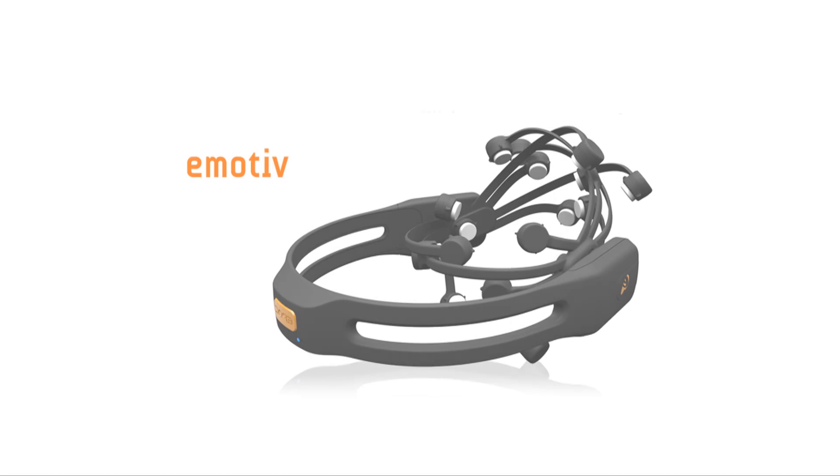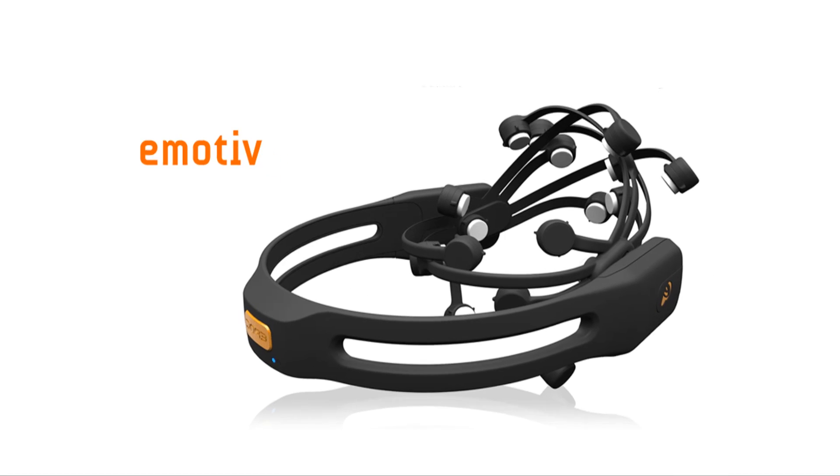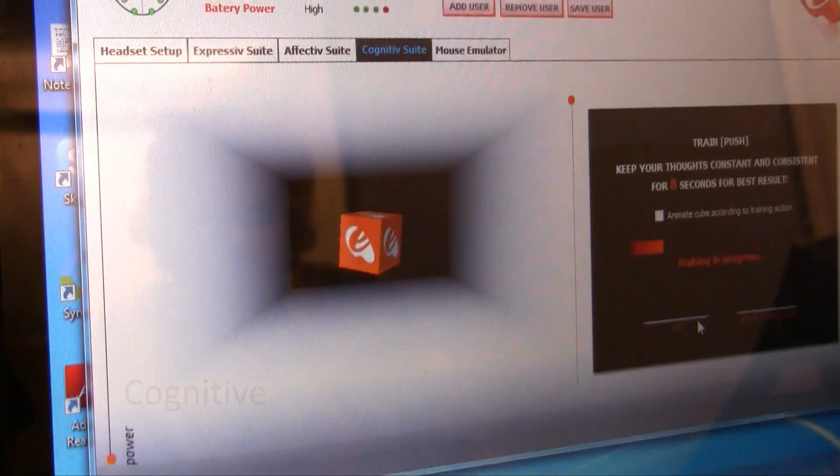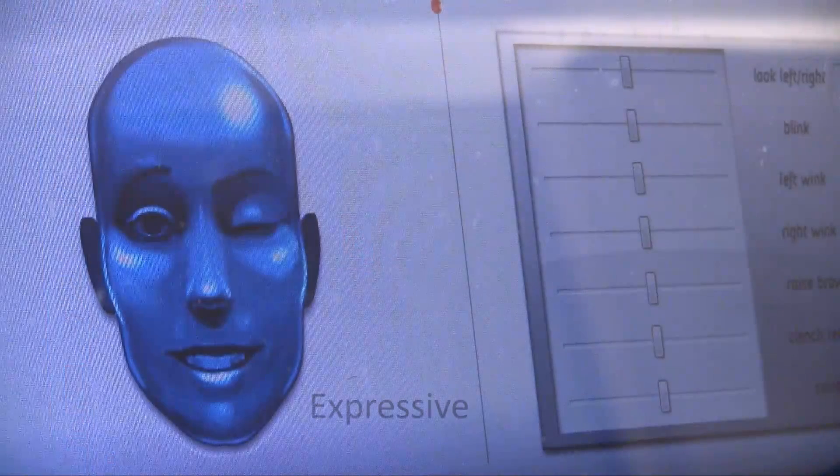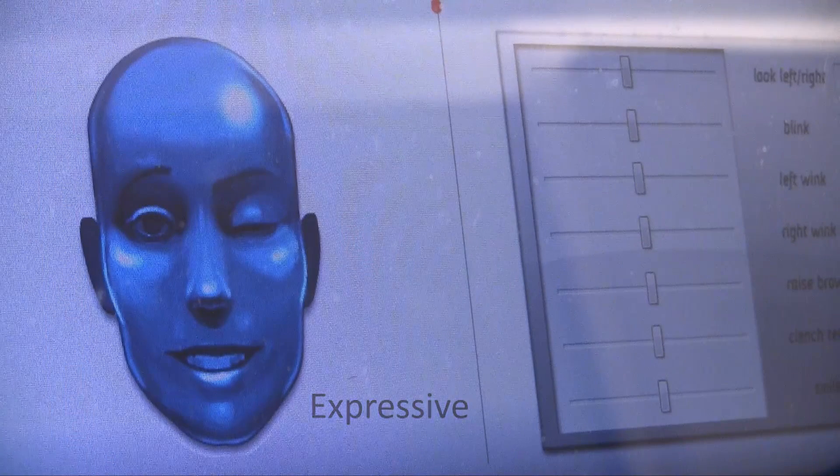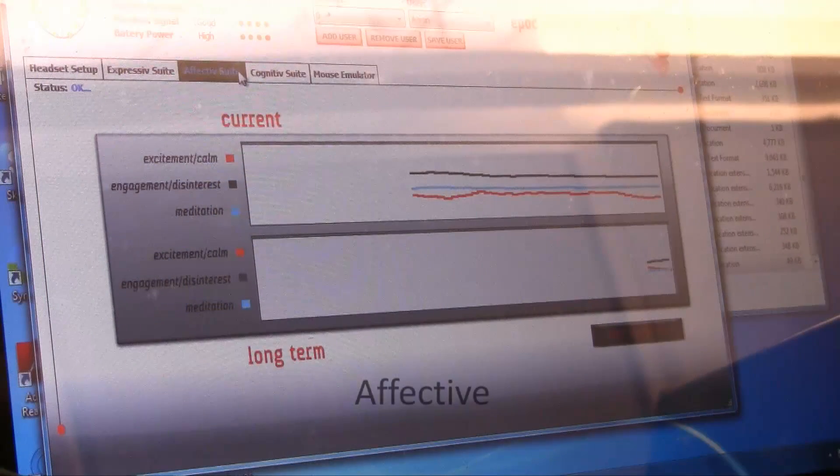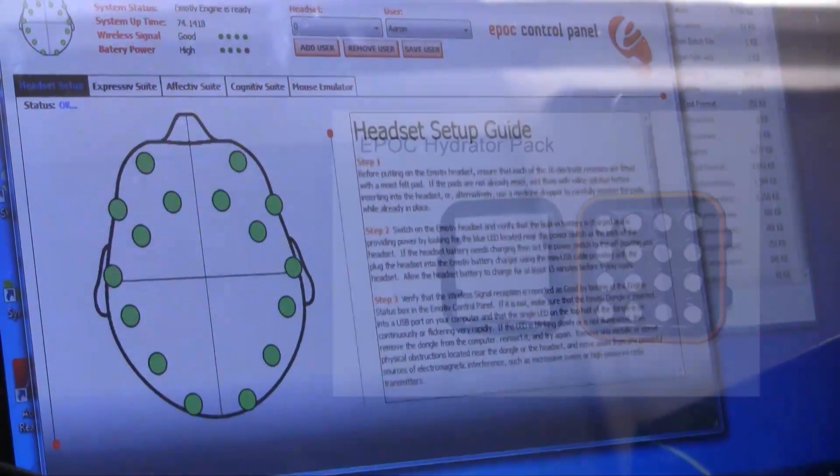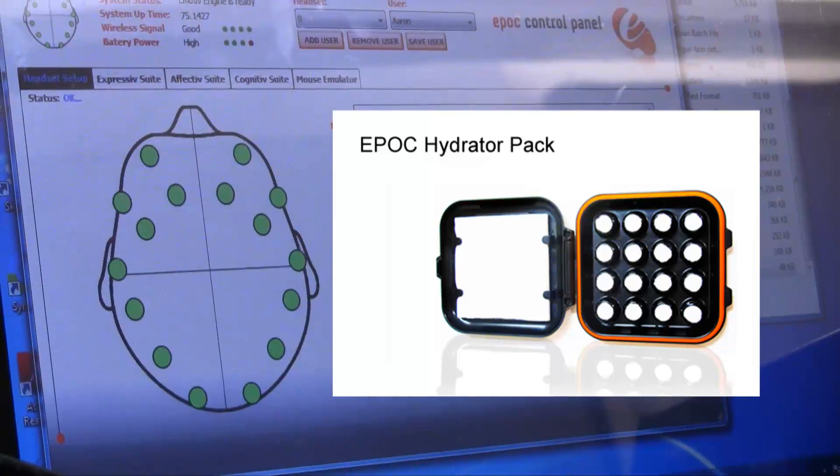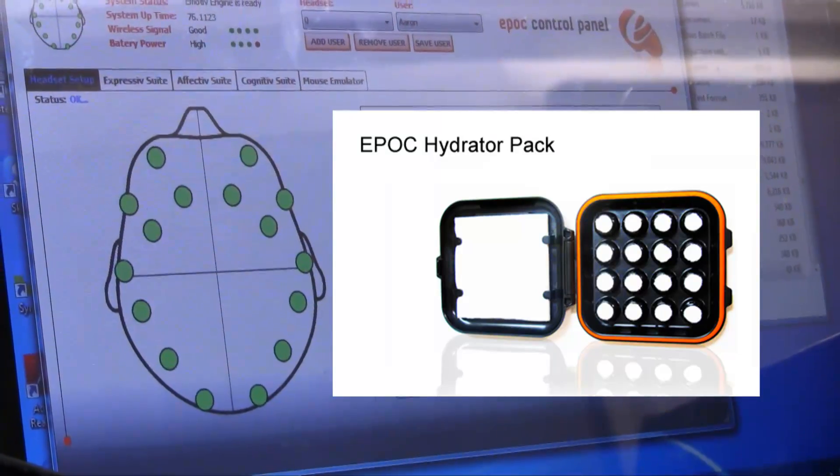With this specific brain computer interface headset, there are 30 pre-programmed cognitive, expressive, and affective brainwave signatures. These signatures are built into the learning algorithms used to detect and categorize raw EEG signal output. The headset acquires these brainwave signals through 16 damp felt-covered electrodes and two rubber reference points.